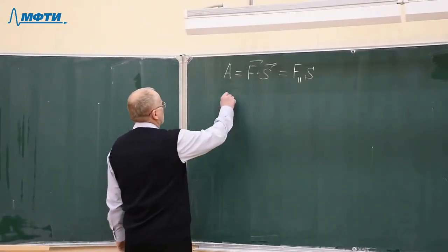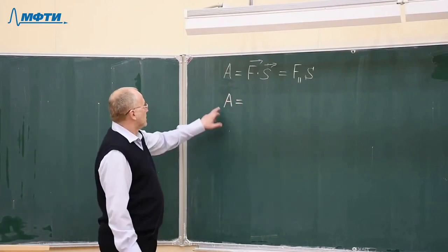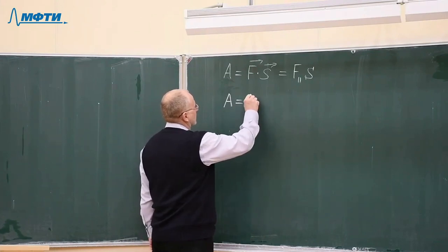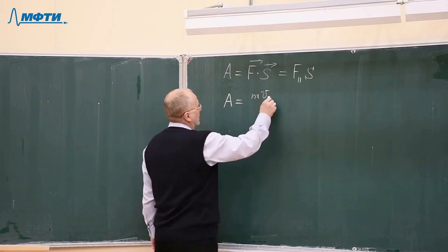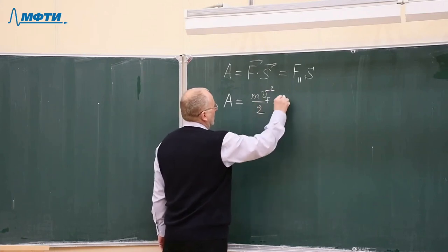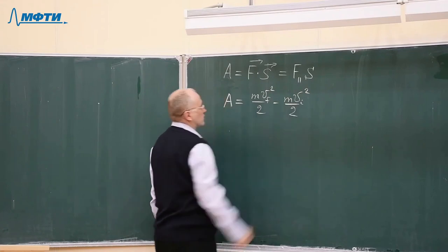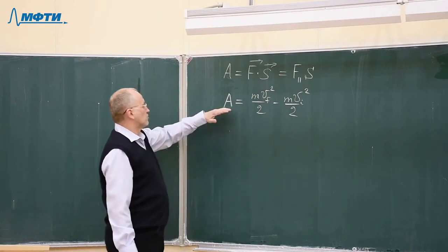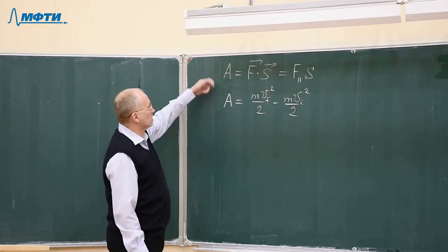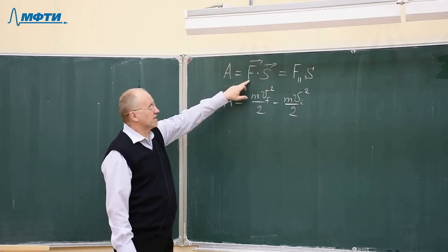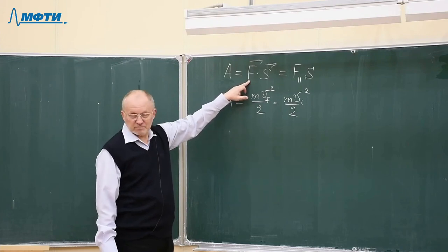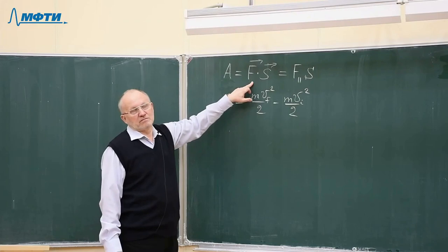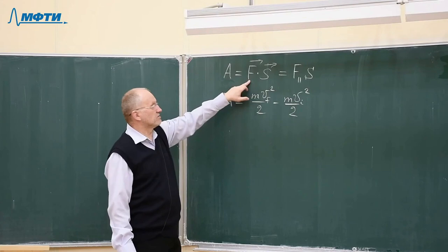We also obtained another formula which establishes the connection between work and kinetic energy. The work produced equals the difference in final and initial kinetic energies of a body of mass M: final kinetic energy minus initial kinetic energy equals the work produced by forces acting on the body. In the first formula, force F can be any force acting on the body — it may be a separate force or the net force, the vector sum of all forces. You can discuss the work produced by a single force acting on a body.